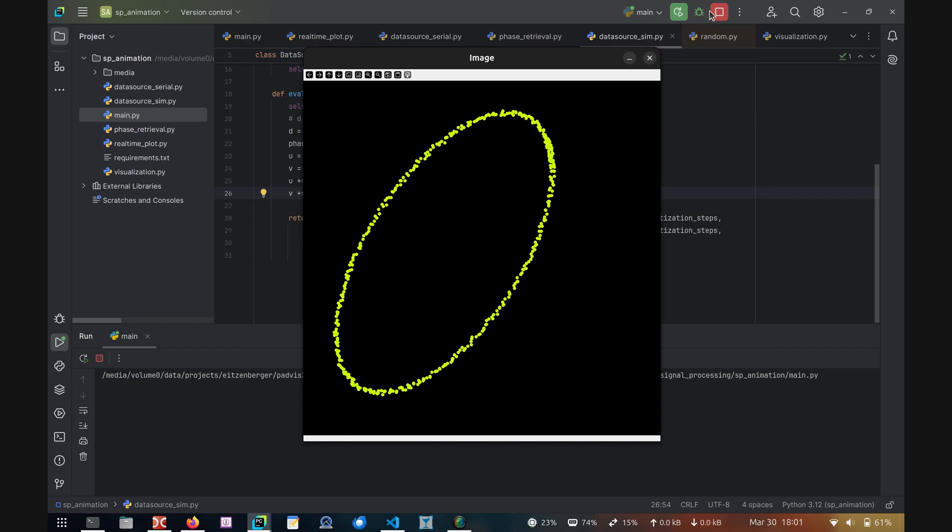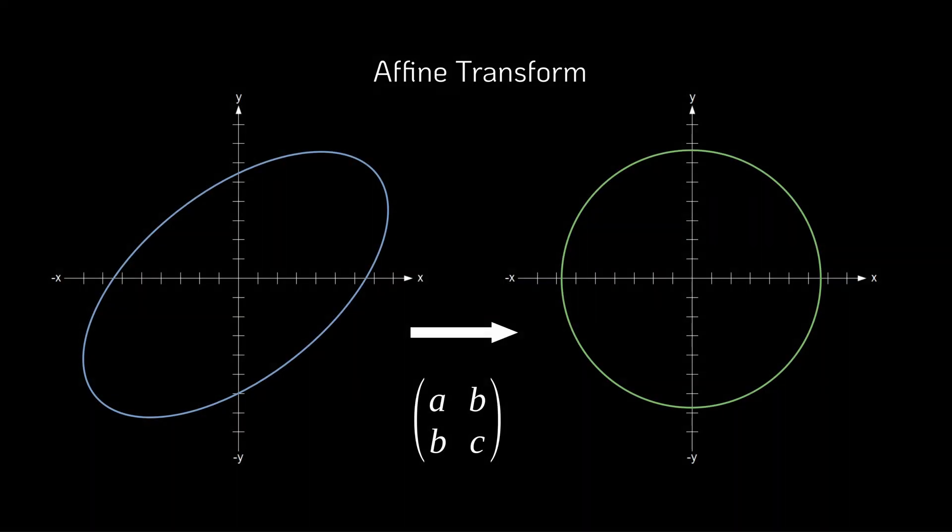The goal now is to retrieve the phase angle of the signal. To do this, the elliptical shape of the signal must be reconstructed. Once the ellipse parameters are known, we can transform the data onto a circle with a known center, from which the phase angle can be easily calculated using the arctangent function.